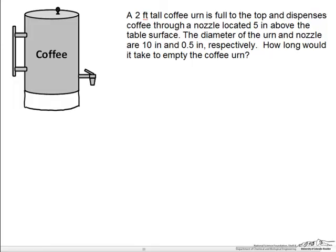So in this problem we have an unsteady state Bernoulli equation. With any problem we should probably start by labeling our diagram with the information given. We have a 2 foot tall coffee urn that dispenses coffee through a nozzle that is 5 inches above the table surface. The diameter of the urn and nozzle are 10 inches and 0.5 inches respectively. We want to know how long it is going to take to drain.